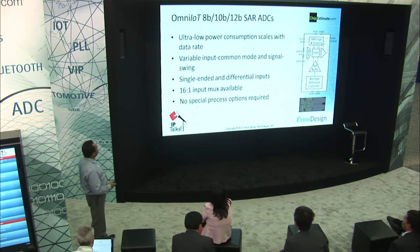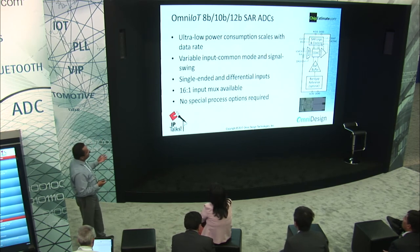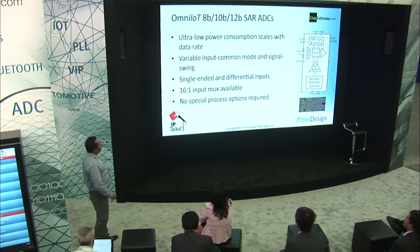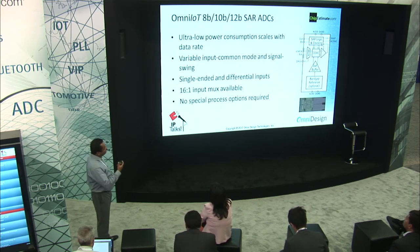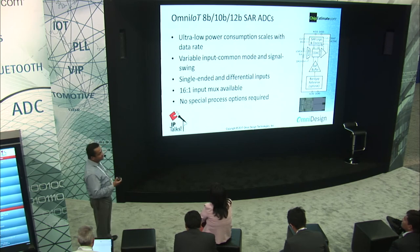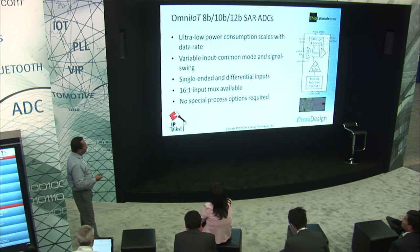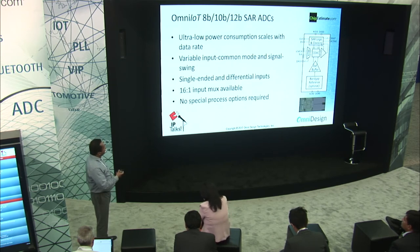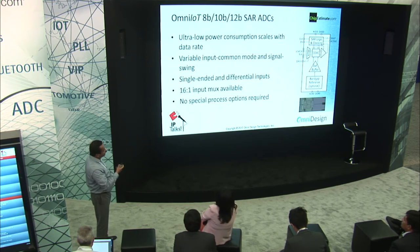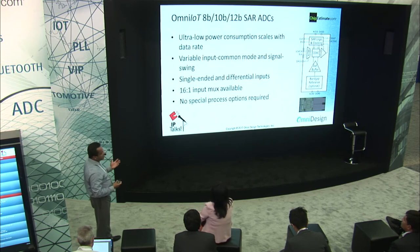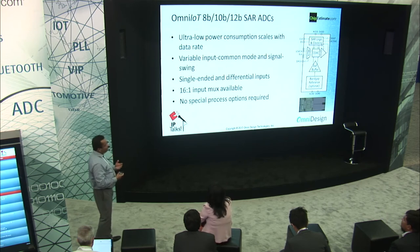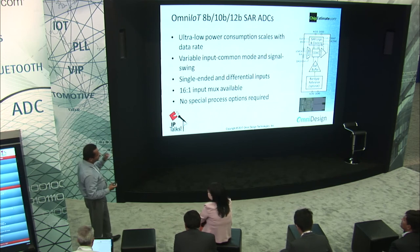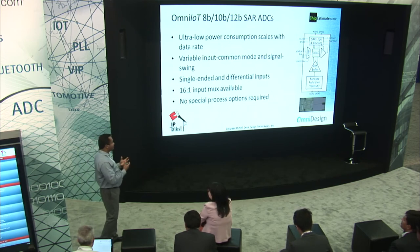Here's an example of a sensor interface. Most sensors need an ADC to take their signals and process them, and in an IoT device you typically have multiple sensors. Our SAR ADCs take no power when idle, and we build in a MUX so you can monitor up to 16 single-ended signals or 8 differential signals using the same IP block, reducing footprint and maximizing flexibility.